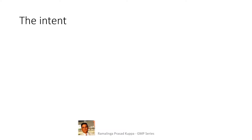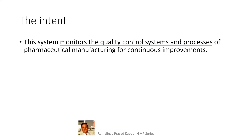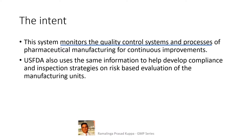The intent: this system monitors the quality control systems and processes of pharmaceutical manufacturing for continuous improvements. This is almost a dynamic online routine monitoring system. In this arrangement, all the data from quality control testing and other manufacturing processes will be collected and evaluated on the potential impact on the quality of the product. The trends of data are a direct indication of the compliance attitudes of the manufacturing unit.